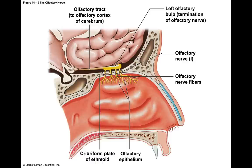With the cranial nerves, you need to be able to tell whether they are sensory, motor, or contain both sensory and motor fibers. If you write down cranial nerves 1 through 12 and use the mnemonic 'some say merry money,' you can remember their classifications.